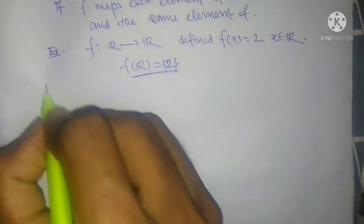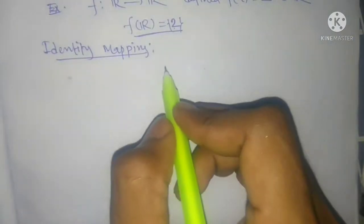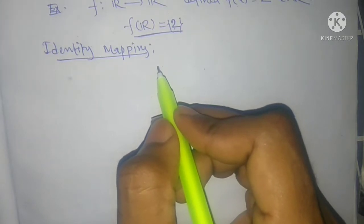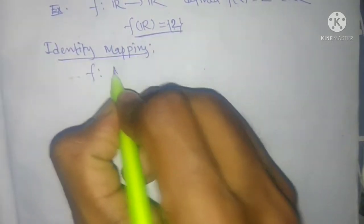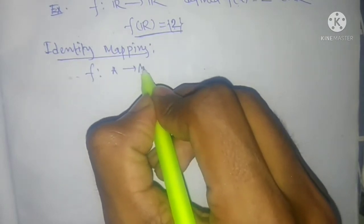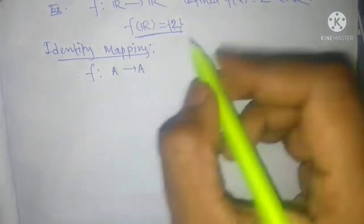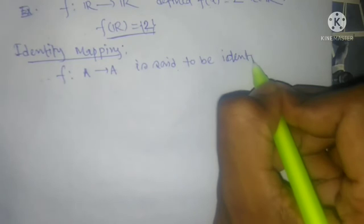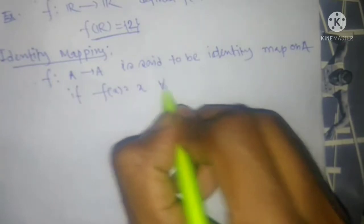Next, the identity mapping. A mapping f from A to A — that is, from a set to itself — is said to be an identity mapping if f(x) = x for all x belonging to A.